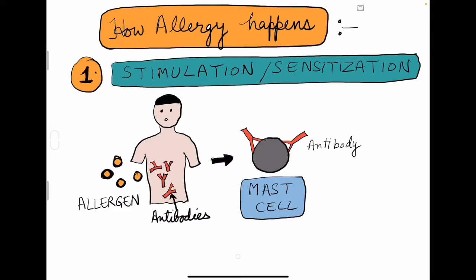How does an allergy begin? How does it happen in the body? There are three steps to it. The first step is stimulation or sensitization by the allergen — the substance that causes an allergy. The allergen may irritate the skin or may have been taken in food. The allergen will cause production of antibodies, which will join with the mast cells in our connective tissues. This is the first step and it is called stimulation by the allergen.